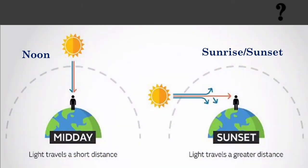Usually the sun appears to be yellowish white, but at the time of sunrise and sunset it appears to be reddish.